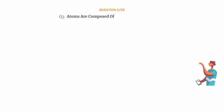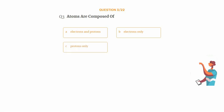Question number 3. Atoms are composed of. Option A: Electrons and protons. Option B: Electrons only. Option C: Protons only. Option D: Electrons and nuclei.